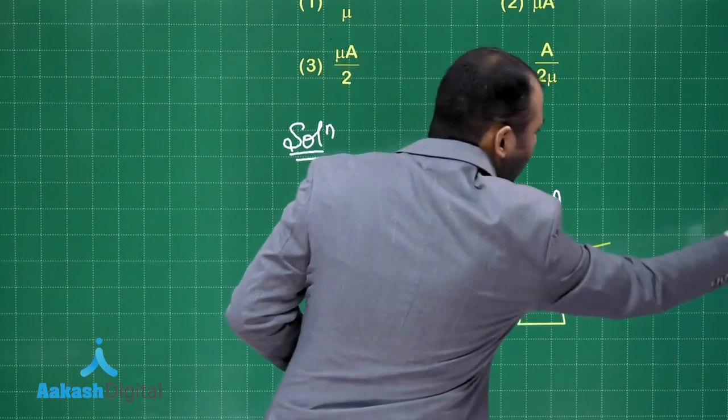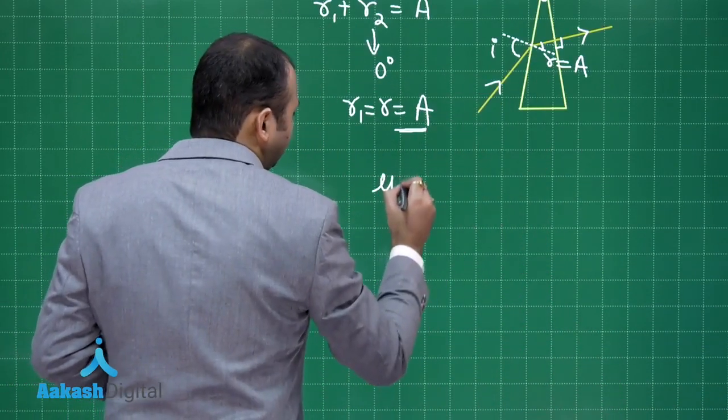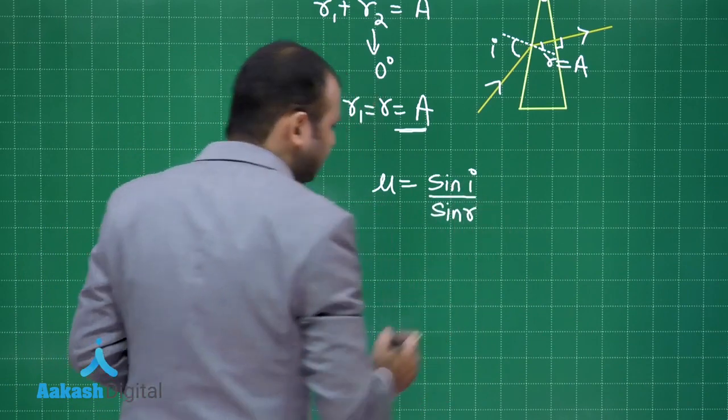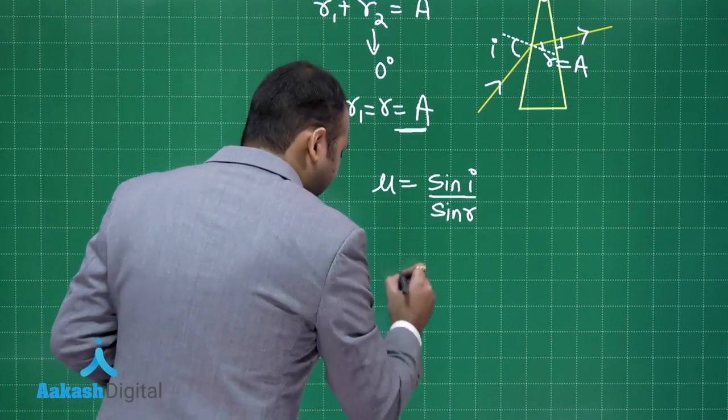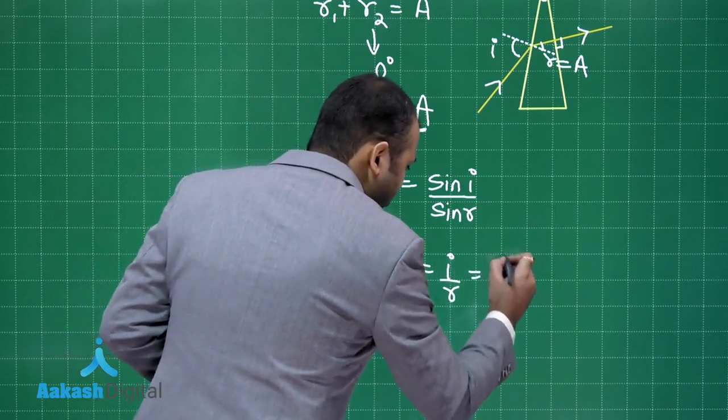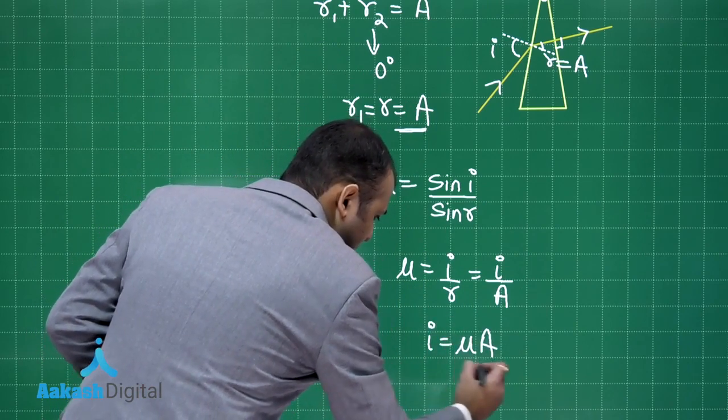Now we all know that mu for this point can be written as mu is equals to sine i by sine r. But since the angles are small, so I can write mu is equals to i by R, or I can also write mu is equals to i by A. And thus I can say that i is equals to mu A.